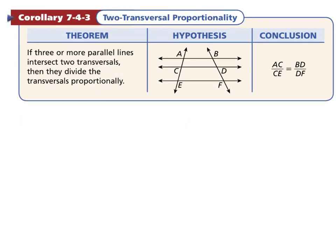We are now going to talk about a corollary, the two-transversal proportionality. It says if three or more parallel lines intersect two transversals, then they divide the transversals proportionally. If we look at our picture, we have three or more parallel lines.